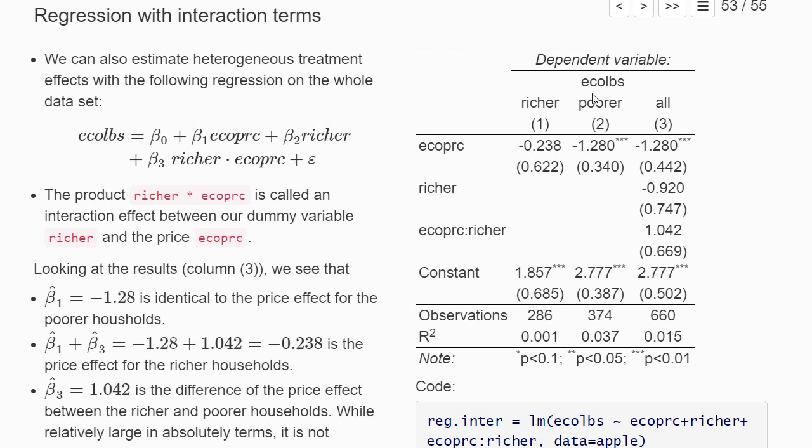And on the right, you see the three regressions we have run. So the first two are the separate regression for the richer and the poorer households. And the third regression is the regression with the interaction terms. And the estimated coefficients of the third regression with interaction terms relate to these coefficients we have in these separate regressions. So we see that the coefficient before ecoprice is the same coefficient than in our separate regression for the poorer households.